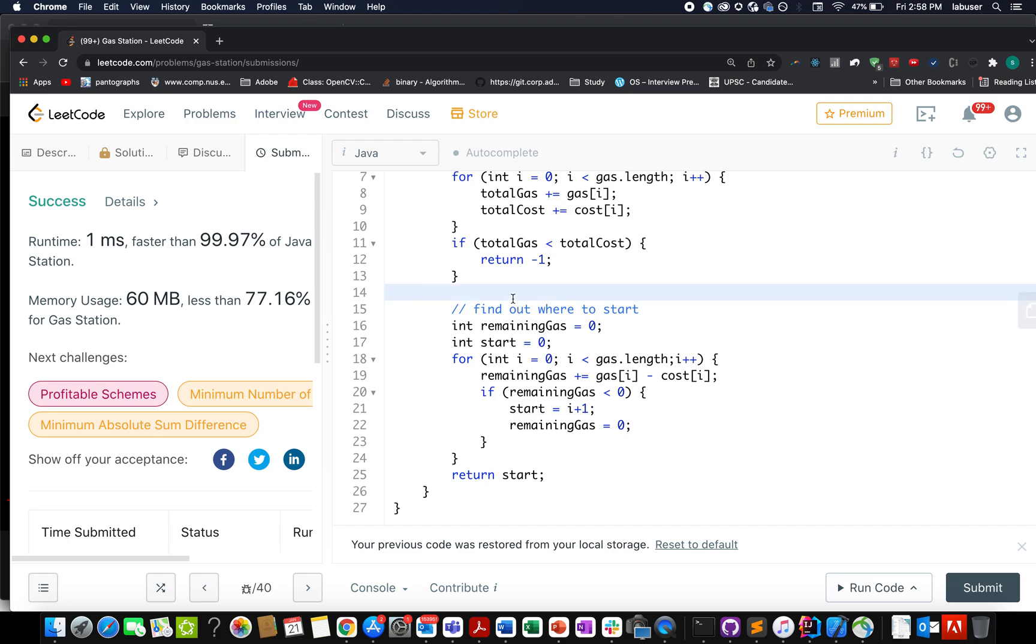Let's proceed ahead. Now we know there must be, there exists a solution. What do I do? I create a variable named remaining gas, I create the starting pointer and point it to zero. The remaining gas is zero by default.